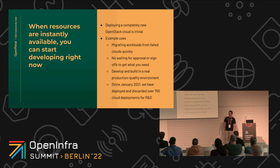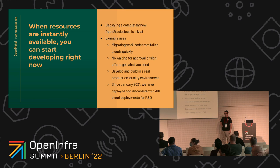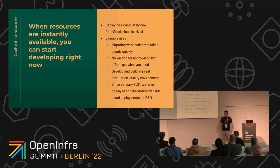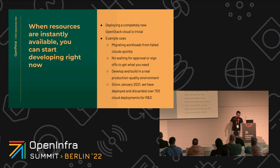The configuration is a real environment — it's the same as production-ready, so you don't have to worry about translating things over or whether it's going to perform right. Since January 2021, we have deployed over 700 clouds on our system — that's probably more than a cloud every day since it has been two years. It really accelerates our work as OpenStack engineers to be able to have that and to get to work right away.